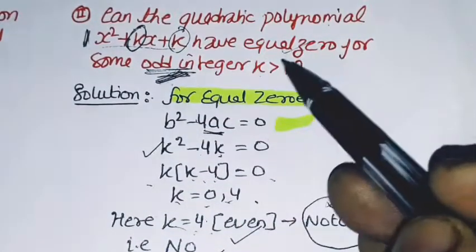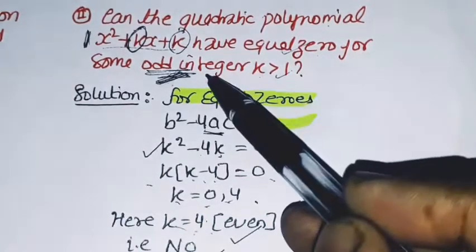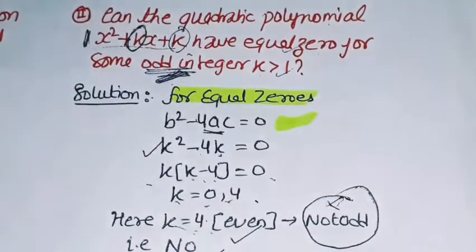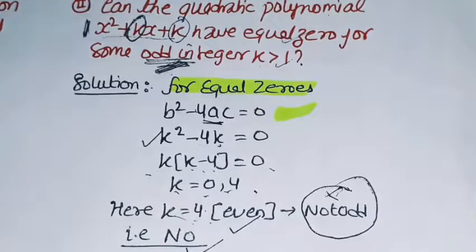And the value where k is greater than 1 and also odd will never give equal zeros. So the answer is no. Thank you.